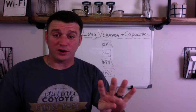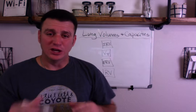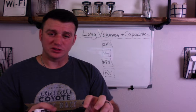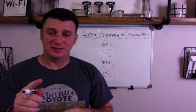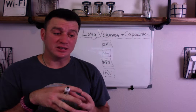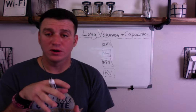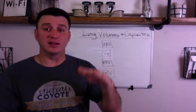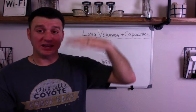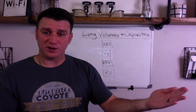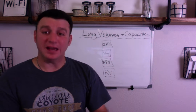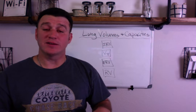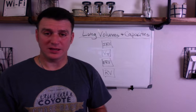The cool thing about this is that there are four volumes and there are four capacities. To simplify this, you need to understand that volumes are individual measurements. Capacities are the combination of two or more volumes. You've got your four volumes here — this should make sense. Breathing normal is tidal volume, as deep as I can breathe in is inspiratory reserve volume, blow out as far as I can is expiratory reserve volume, and any volume left after I've blown out everything I can is residual volume.